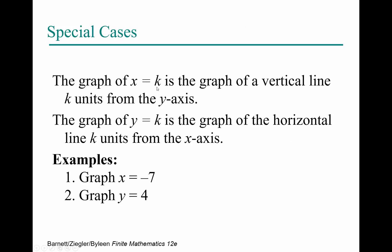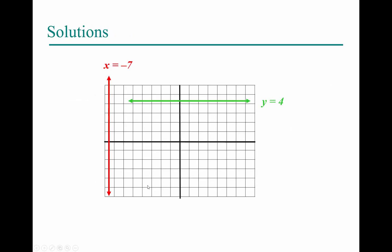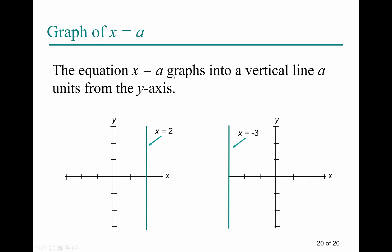Special cases: for a vertical line, x equals a constant — y can be anything, but x is always that fixed value. For a horizontal line, y equals a constant — x can be anything, but y is fixed. For example, x = −7 is a vertical line where x is always −7, and y = 4 is a horizontal line where y is always 4. Similarly, x = 2 and x = −3 are vertical lines.